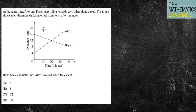Next question. At the same time Alex and Brian start riding towards each other along a road. The graph shows their distances in kilometers from town after 10 minutes. How many kilometers has Alex traveled when they meet? Well this is where Alex is. He's currently 4 kilometers away. He meets at this point here which is at 12 kilometers. Therefore he has ridden 8 kilometers which is B.